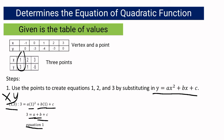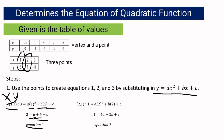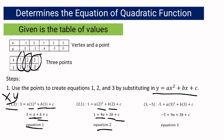For equation 2, use the second pair (2, 1): y equals 1 and x equals 2. Simplifying: 2 squared is 4, so 1 equals 4a plus 2b plus c. This is equation 2. For equation 3, use the third pair (3, negative 5): y equals negative 5 and x equals 3. Simplifying: 3 squared is 9, so negative 5 equals 9a plus 3b plus c. This is equation 3.